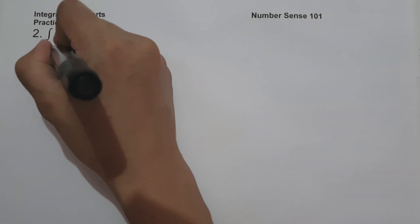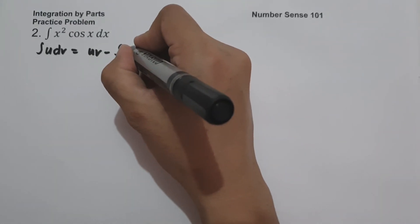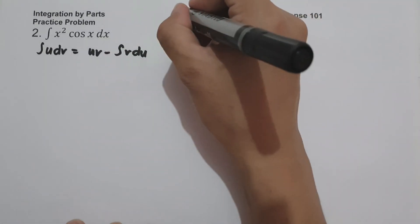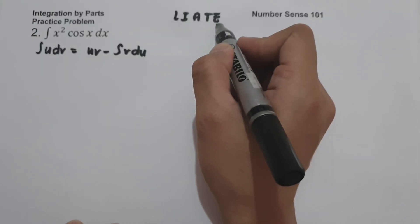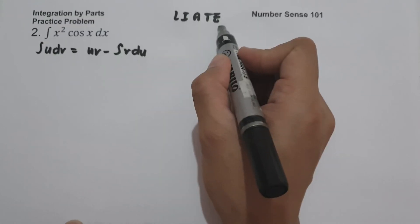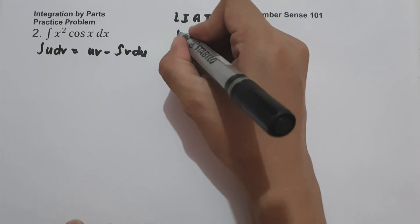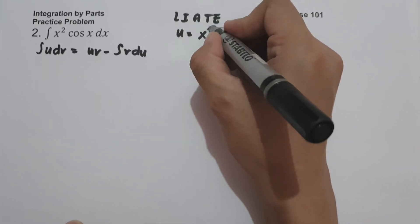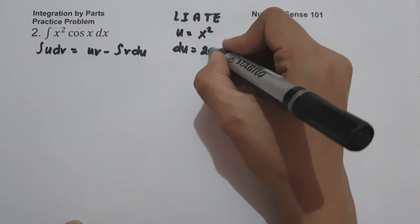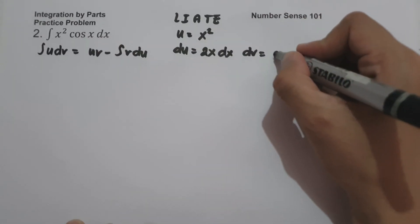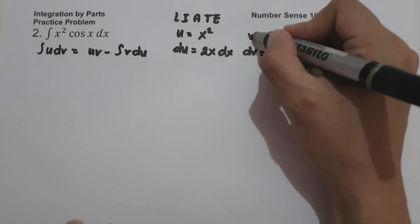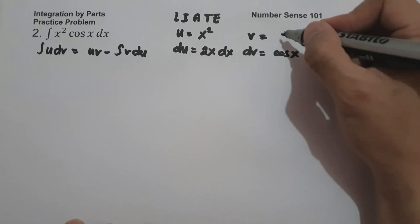For example 2, what is the antiderivative of x²·cos(x) dx? Using the LIATE acronym: x² is algebra and cosine is trigonometry, so algebra comes first — therefore u = x². Then du is the derivative of x², which is 2x dx. And dv is cos(x) dx, so v is the antiderivative of cos(x), which is sin(x).